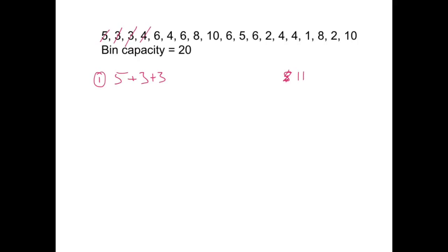Adding the next number, 4, that's okay. I can add that one in, my total is now 15. And the 6 doesn't actually fit in that one, so I've got to start the next bin. So for bin number 2, I've got a 6. Let's cross that one off.